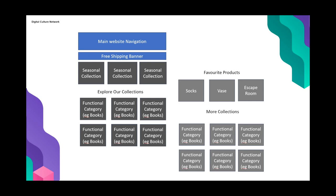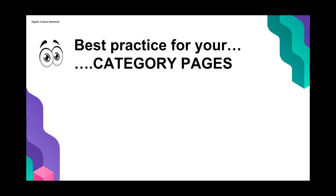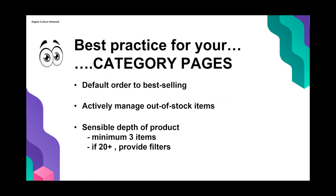On category pages, to make best use of our users' attention we really want to be showing them best-selling products first — that should be our default order. We want to be actively managing out-of-stock items, showing a sensible amount of products (a minimum of three items is recommended), and if you've got a lot of products in a category, looking at whether you can provide filters.